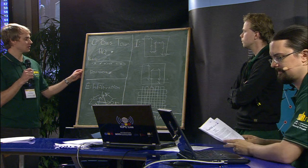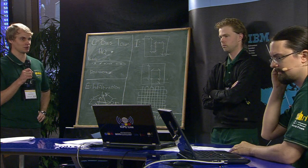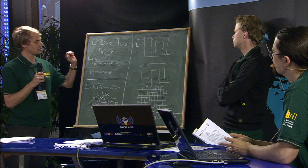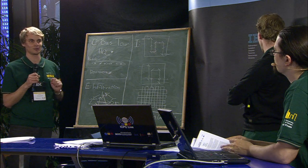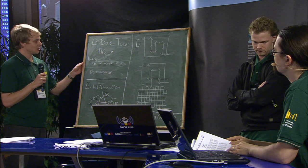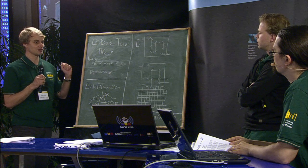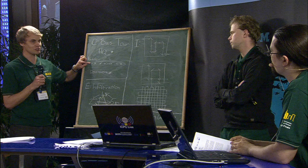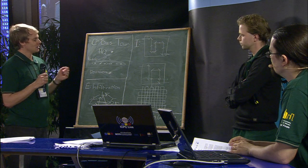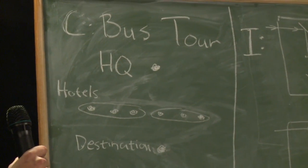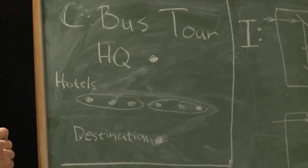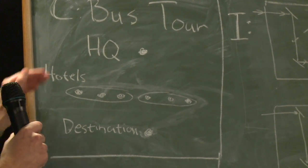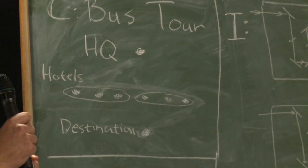In this problem, we have a headquarters where we are starting a bus tour for some tourists, maybe in Warsaw. And we have to pick them up at their hotels. And then we have a headquarters and a bunch of hotels and a destination. And we want to do this as efficiently as possible. So we want the shortest tour here, picking up all the tourists and going to the destination.